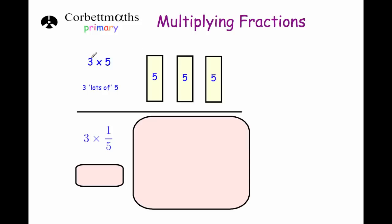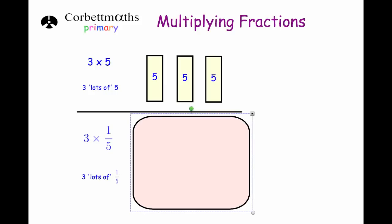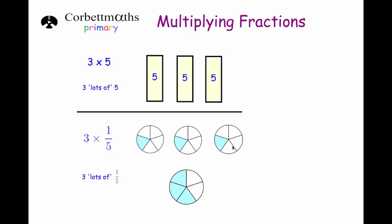If we consider 3 times 5, that means 3 lots of 5 — a 5, a 5, and another 5 — and 3 fives is 15. We can consider multiplying fractions by whole numbers in the same way. For example, 3 times 1 fifth would be 3 lots of 1 fifth: 1 fifth, 1 fifth, and another 1 fifth — giving us 3 fifths.